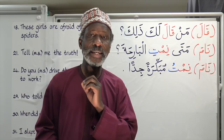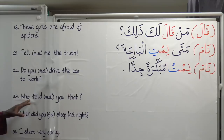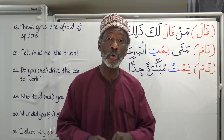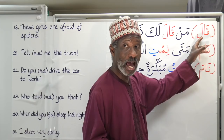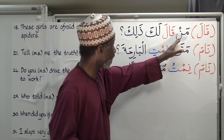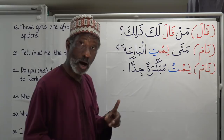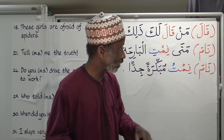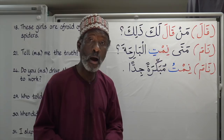Let's look at number 29 of exercise 12: 'Who told you that?' — speaking to a single male. We're going to use the verb to say, Qala, and conjugate it. Man qala laka dhalik — 'Who told you that?' or 'Who said that to you?' Qala remains the same for third person singular masculine.